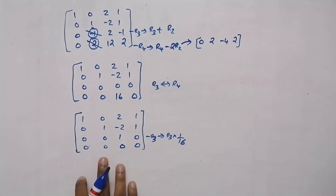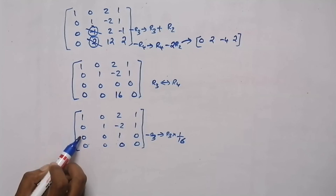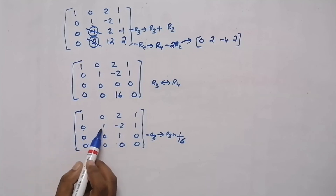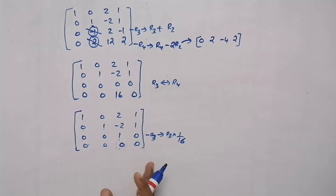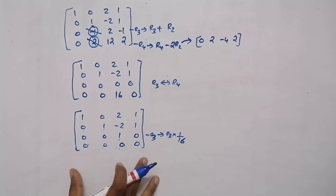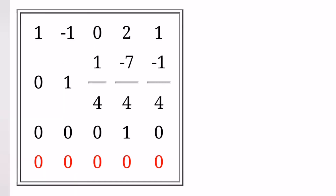So this will be our final matrix after doing row echelon form. To summarize: make the first element 1, then all elements under that 1 should be 0; in the second row the first non-zero element should be 1, and all elements under it should be 0; in the third row the first non-zero element should be 1, and all elements under it should be 0. This is our final matrix after row echelon form. If you understand the topic, do this question and check whether you get this answer. If not, please mention your doubt in the comment section — we are always here to help you. Thank you.